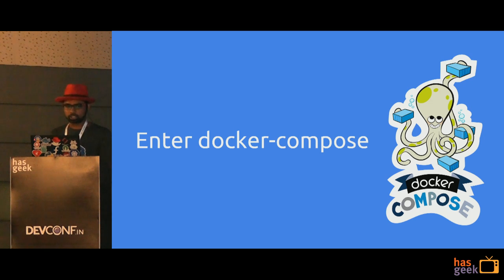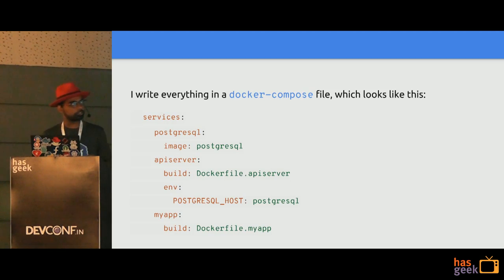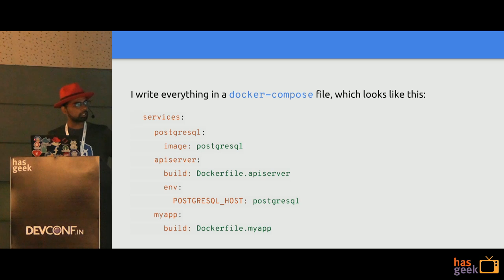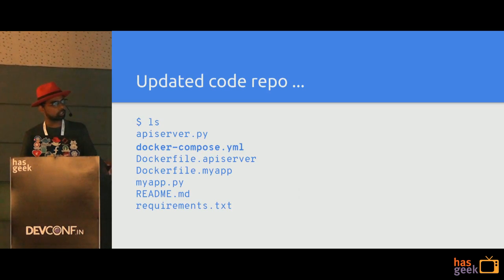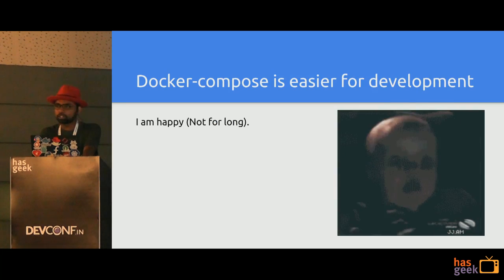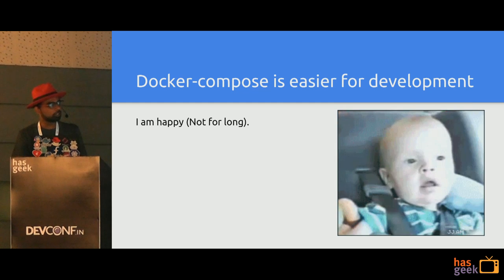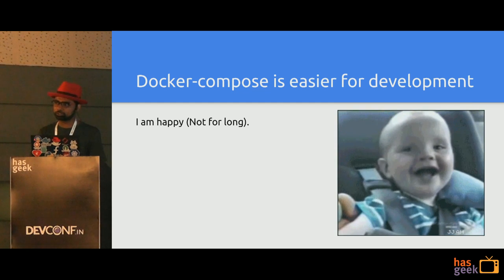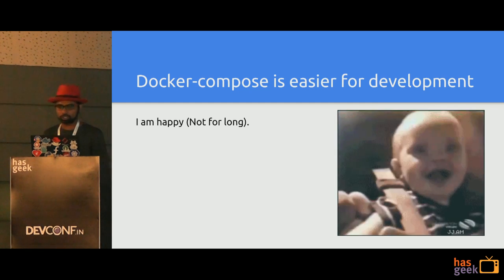That's where Docker Compose comes in. It helps you write everything into one file. Once I add the Docker Compose file, where I have specified what ports there are, what volume mounts I need to do, and what Dockerfiles everyone is going to consume — so now I have two Dockerfiles for each service and a Docker Compose file. All I need to do is Docker Compose up and curl. Everything is going fine, I'm happy. But how long is this good for local development? Now I want to take it to a production-like system.